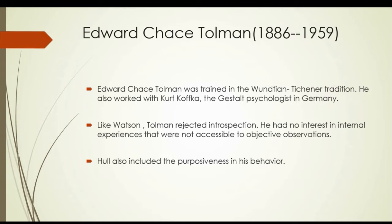Behavior is a function of these independent variables. According to Tolman, the intervening variables are the actual determinants of behavior. They are the internal processes. The intervening variable is what is going on within the organism that brings about a given response to a given stimulus. Because the intervening variable cannot be objectively observed, it is of no use to science unless it can be clearly related to both the experimental independent variable and the behavior dependent variable.